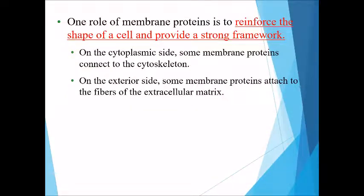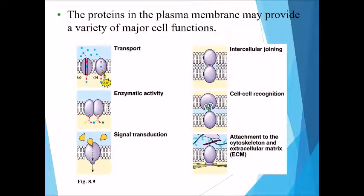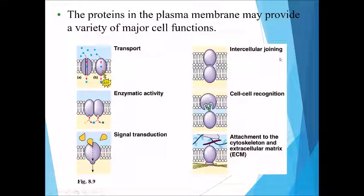One role of membrane proteins is to reinforce the shape of the cell and provide a strong framework. On the cytoplasmic side, some membrane proteins connect to the cytoskeleton, while on the exterior side some attach to fibers of the extracellular matrix. Other functions of the plasma membrane include enzyme activity, signal transduction, intercellular joining, cell-to-cell recognition, transport, and attachment to the cytoskeleton and extracellular matrix.